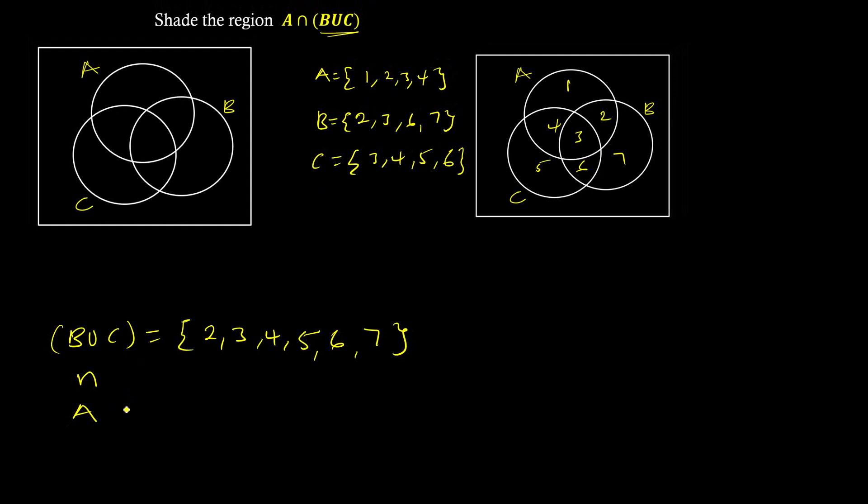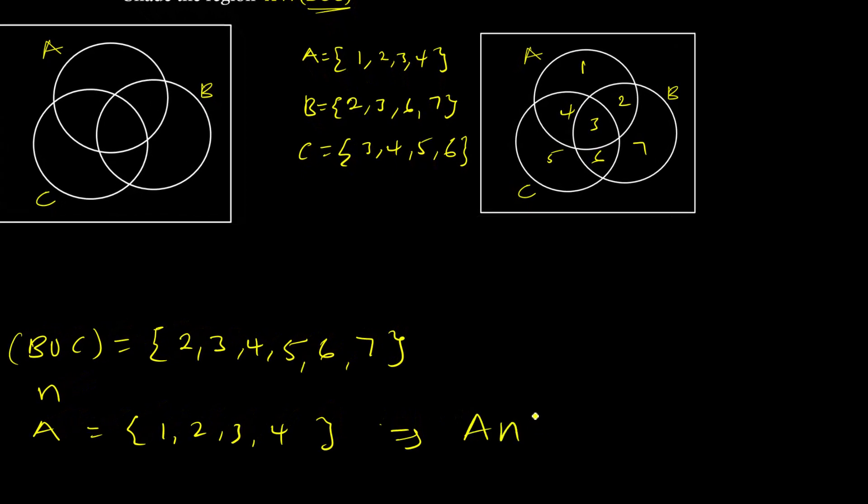Let's find intersection A. We know A is what? A is {1, 2, 3, 4}. Therefore, A intersection B union C - let's look at all the common elements in both sets. Two, two, three, three, four. So we have two, three, then four.